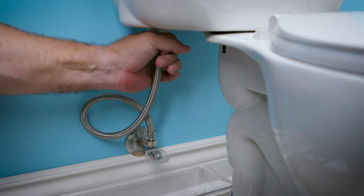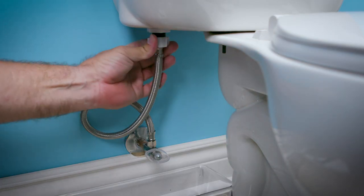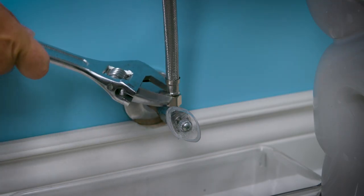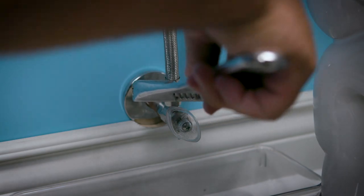Next, disconnect the supply line from the toilet tank. Place the bucket under the toilet valve to catch any remaining water. Once that's done, the supply line will need to be disconnected from the shutoff valve.